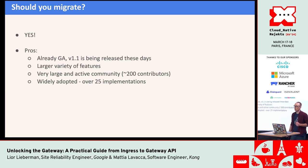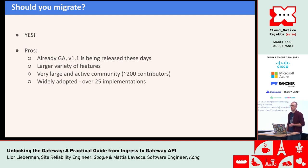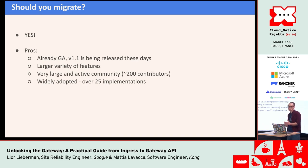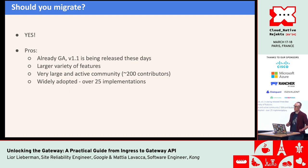Gateway API is already GA — it was promoted last year during KubeCon North America 2023, and a new version 1.1 is going to be released right after this KubeCon. There is a larger variety of features compared to Ingress, a very large and active community of around 200 contributors, and a lot of attention on this API with many talks at past and present KubeCons. It is widely adopted, with over 25 implementations so far at various levels of support — alpha, beta, and GA.